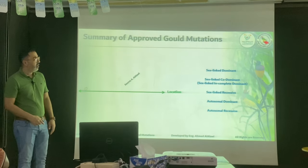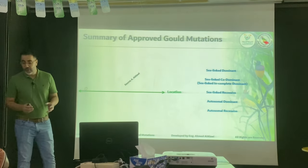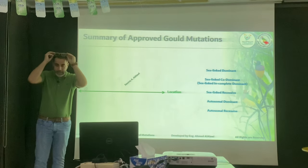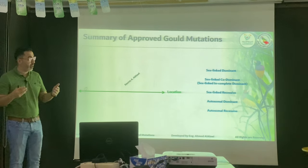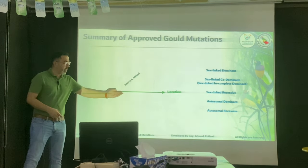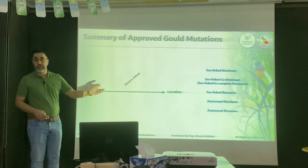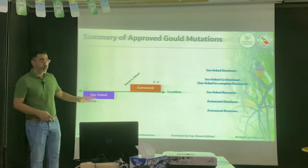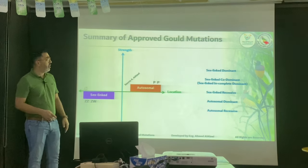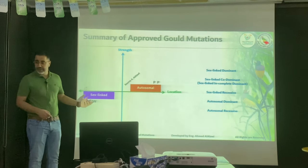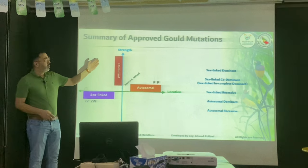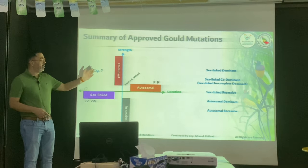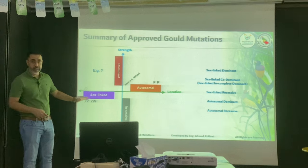We start with the formula I created for understanding mutations. Like studying x-axis and y-axis in mathematics, I call the x-axis the location of the gene — sex-linked or autosomal. The y-axis is the strength of that feature: is it dominant or recessive? The naming always starts with x-axis, then y-axis: sex-linked dominant, sex-linked recessive, autosomal dominant, autosomal recessive.